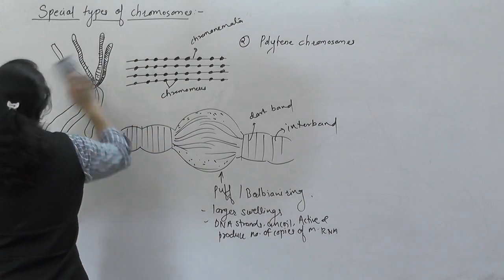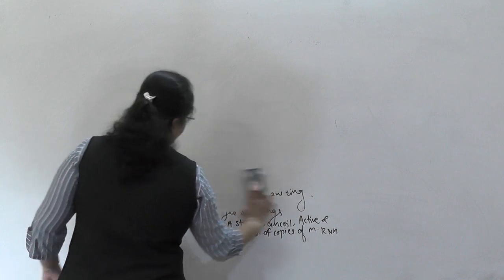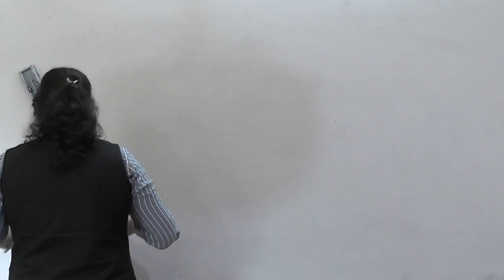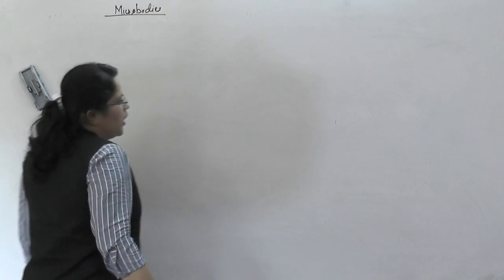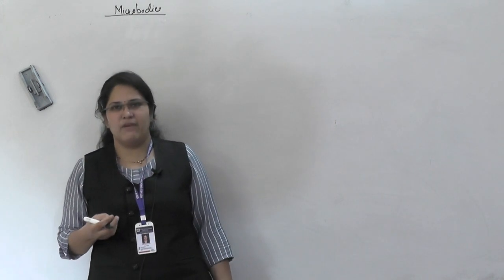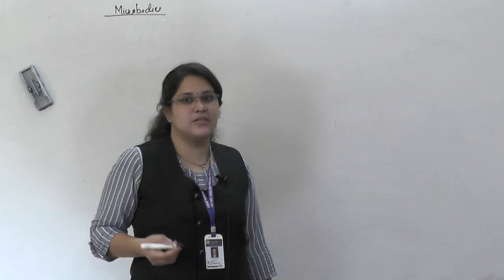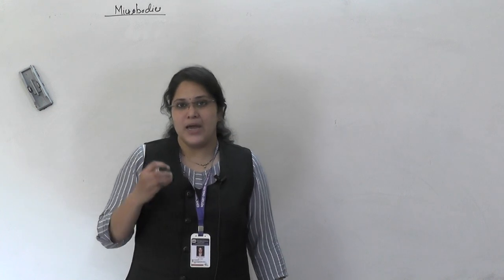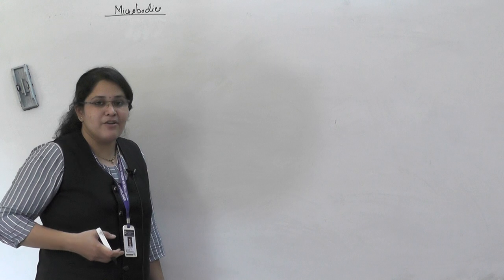Now let us see the last part of this lesson — the last cell organelles remaining, that is microbodies. There are three types of microbodies. These microbodies are single membrane-bound, just like vacuoles or lysosomes — they are tiny, oval-shaped structures. Some are present in animal cells, some in plant cells. They are covered by a single membrane and are filled with different enzymes which catalyze several metabolic reactions.